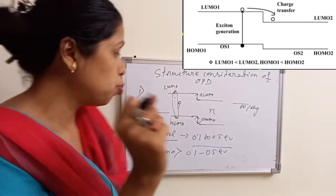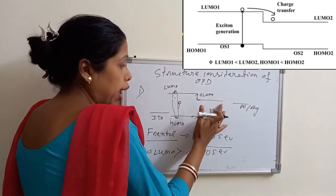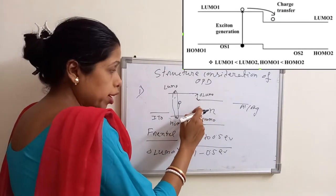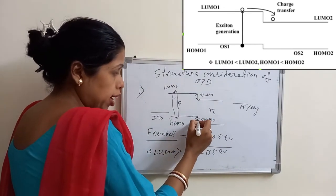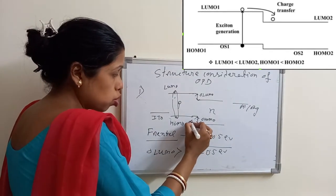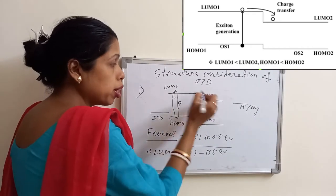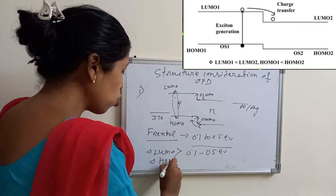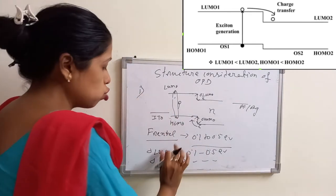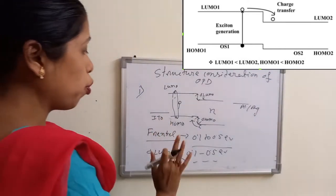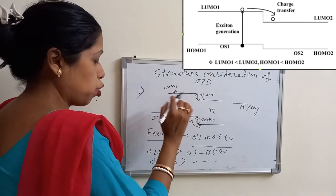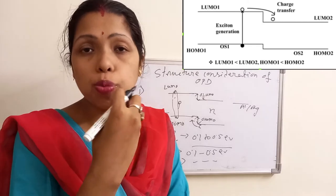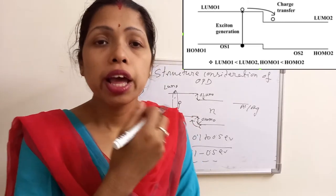For the case of electron dissociation, delta LUMO should be greater than 0.1 to 0.5 electron volt. Suppose if the exciton is produced in the N-type semiconductor, it will again diffuse to the interface, and at the interface it has to break. For this case, this energetic gap is important because the hole has to reach there. The electron remains in the LUMO level, but the hole has to reach there. So, for breaking the hole, delta LUMO should also be greater than this value. Delta LUMO — both values are important, but maximum excitons are produced inside the P-type semiconductor, so this is mainly the important delta LUMO. The value of delta LUMO should be greater than 0.1 to 0.5 electron volt. 0.1 is the minimum value and 0.5 is the maximum value. This is the first condition.